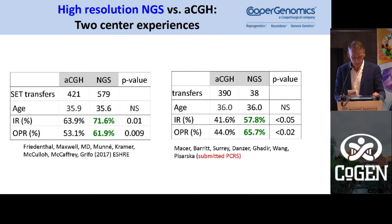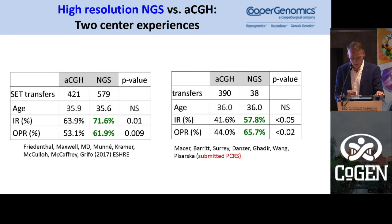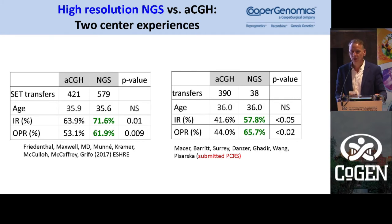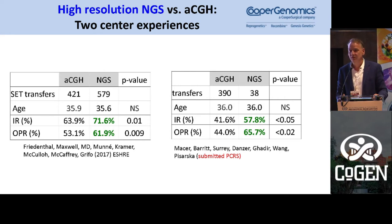This is data from two collaborating centers showing that just by screening against mosaic embryos, you have a higher ongoing pregnancy rate compared to array CGH where we couldn't do that. This is to maximize ongoing pregnancy rate when you have a bunch of embryos — it's a selection technique. If there is nothing else to transfer, then you transfer a mosaic embryo. We're not throwing away normal embryos; we're just selecting them. It's between the patient and the doctor to decide.